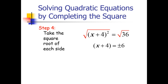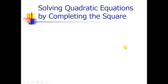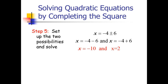Since we have not yet isolated x, we transpose the plus 4 to the right side, giving us x equals negative 4 plus or minus 6. For step 5, we set up the two possibilities and solve: negative 4 minus 6 equals negative 10, and negative 4 plus 6 equals positive 2. So our values for x are x equals negative 10 and x equals 2.